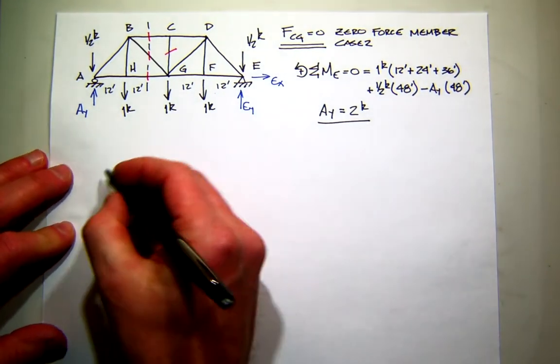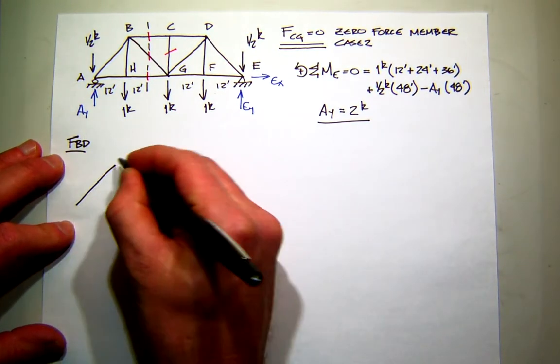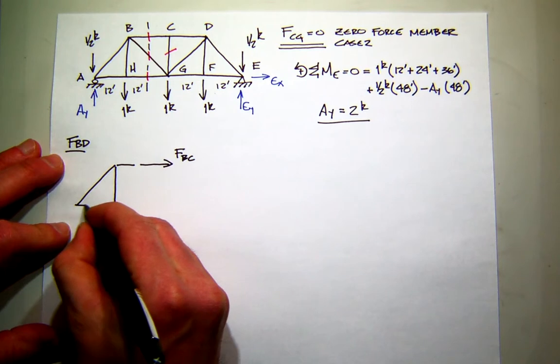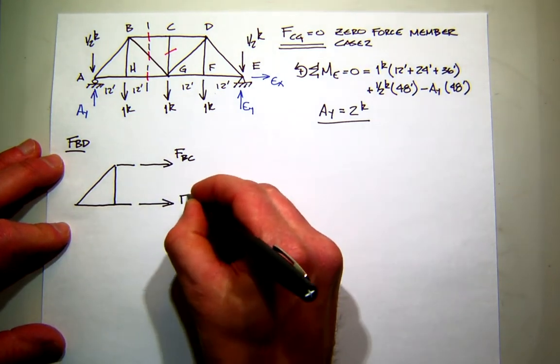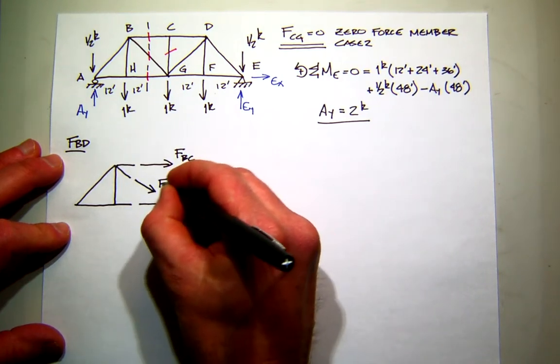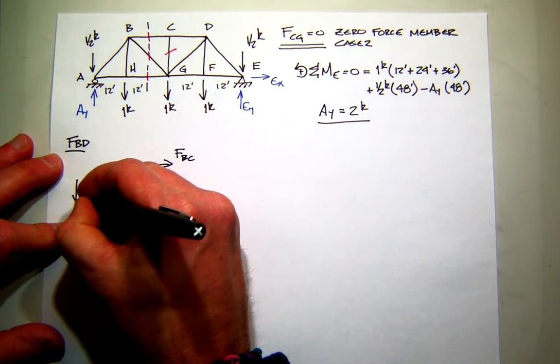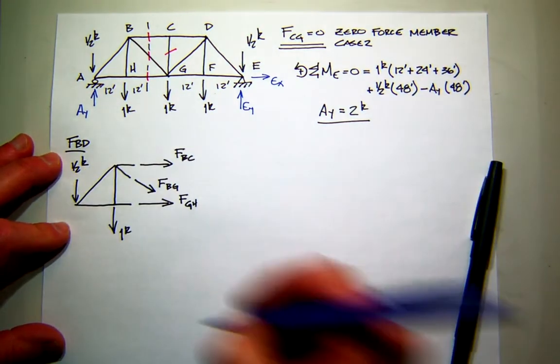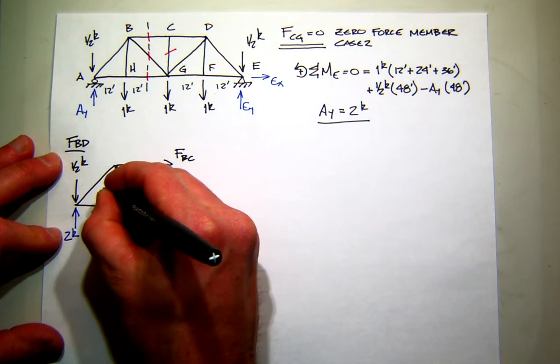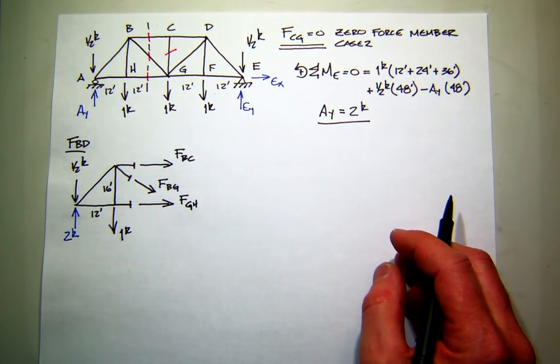Alright. So now I'm going to draw my free body diagram for the left-hand side. So let's do that. So there's my free body diagram. So I'll start. So up here at the top, I'll assume tension in BC. Down here at the bottom, I'll assume tension in GH. There's my diagonal force. Tension in BG. Then I have an applied one kip force, an applied half kip force, and I have my new reaction, which is two kips. And I think this is twelve, and this is sixteen. Everybody see that? I'll just put little things there to show you where I've cut it.